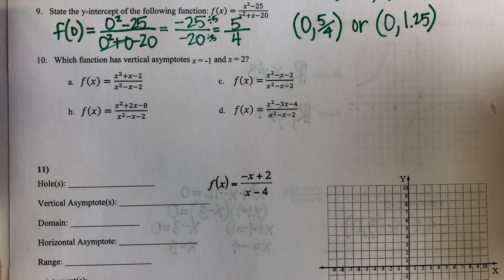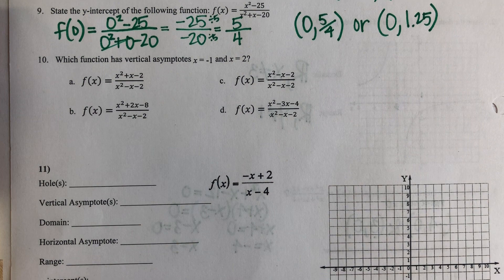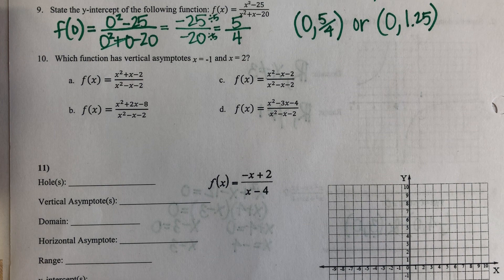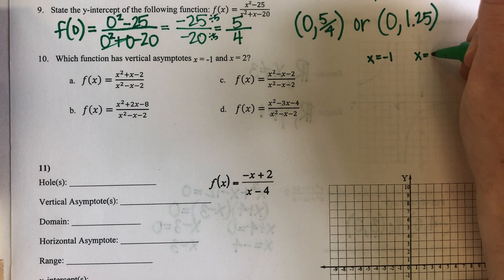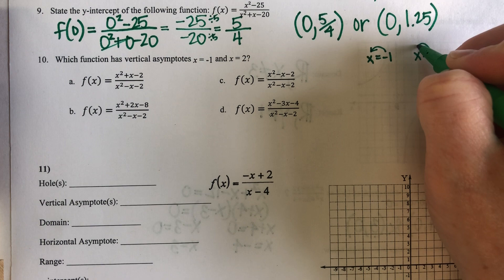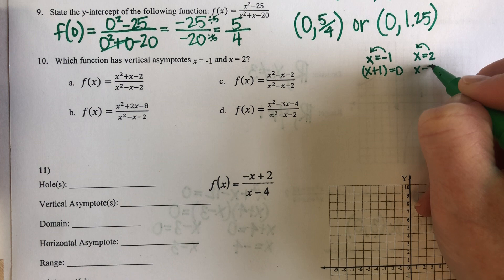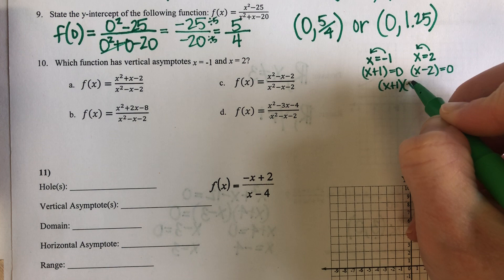Number ten says: which function has vertical asymptotes at X equals negative one and X equals two? That asks me to look at each one of these functions and pick the one that these two things would come from my denominators. I'm going to take X equals negative one and X equals two and move each one of those values back over with the X so that I know what the factor should be in the denominator. What I should be looking for is when my denominator has X plus one and X minus two in the bottom, and nothing cancels out.